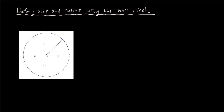Last lesson we constructed this unit circle, and as you would have realized there is a right angle triangle in this unit circle located here. This is our right angle here and this is our θ here. According to standard trigonometry procedures, since θ is here and the right angle is here, this would be our hypotenuse, this will be our opposite, and this will be our adjacent side.